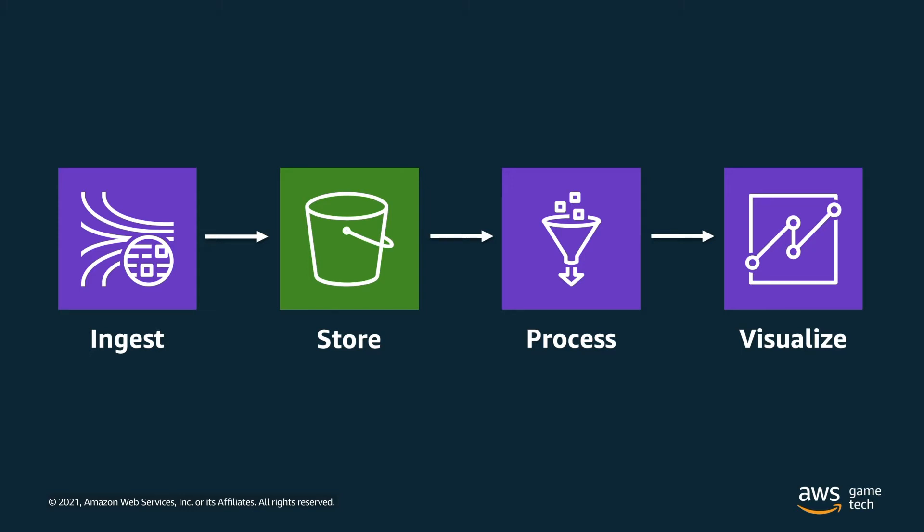Let's take a look at the architecture. The entire architecture can be boiled down to four simple concepts: ingest, store, process, and visualize. You ingest game event data, store it in durable object storage, process it to optimize it for analytics, and visualize it using different dashboards. This is really all that's happening.